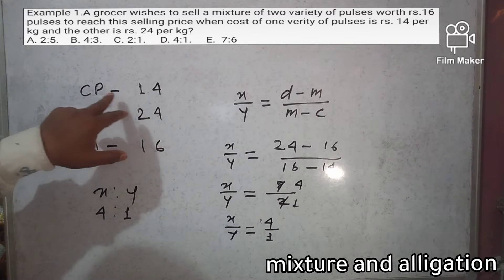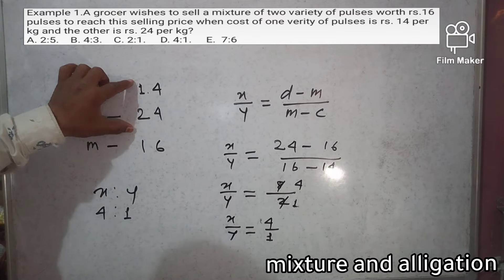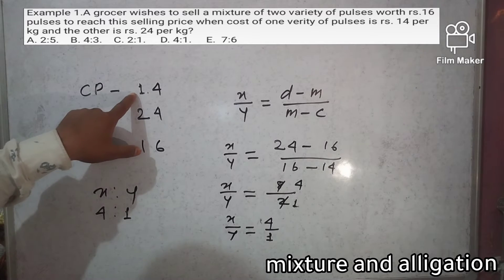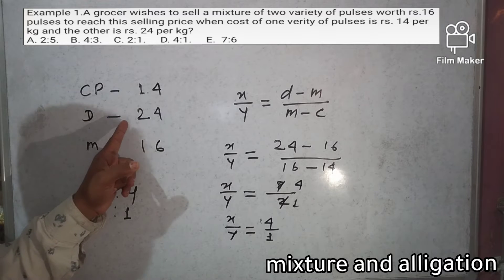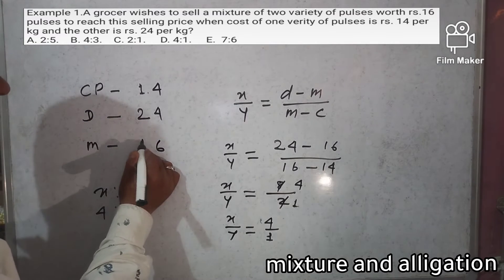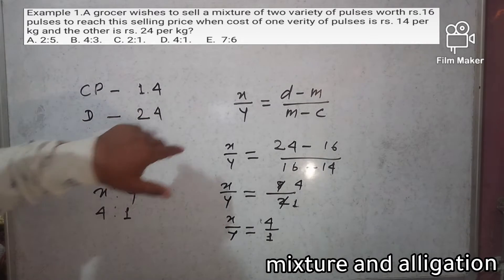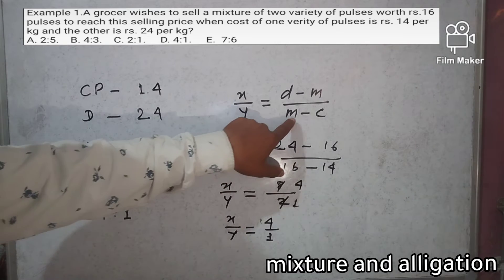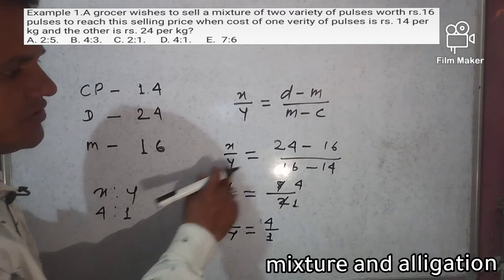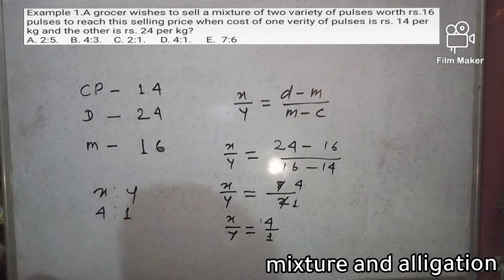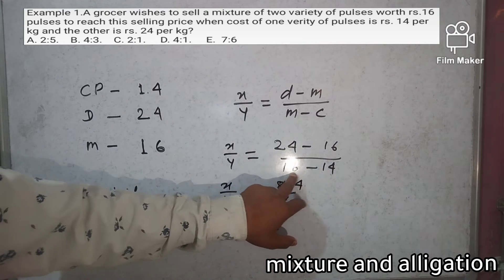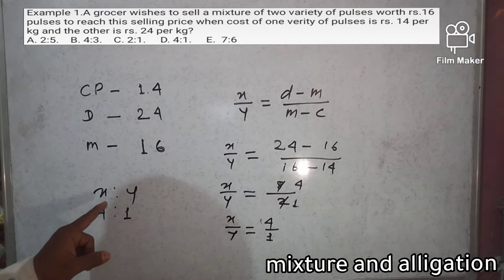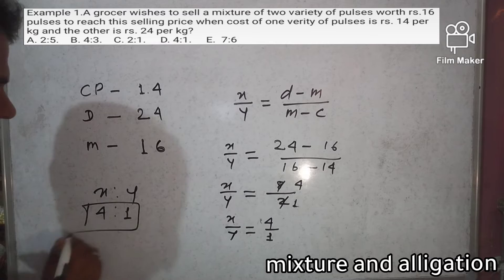In this question, cheaper value is 14 and dearer value is 24. Both are mixed at Rs 14 per kg and Rs 24 per kg to give a mix of Rs 16 per kg. Applying the rule of allegation, x by y equals (dearer minus mix) by (mix minus cheaper) = (24 minus 16) by (16 minus 14) = 8 by 2 = 4 by 1. So the answer is 4 is to 1.